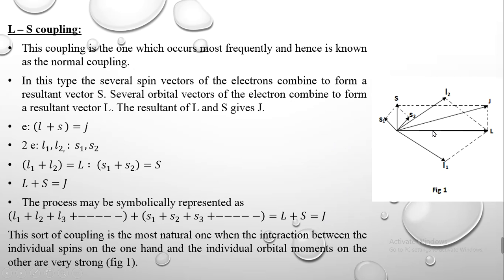Diagrammatically, it is represented in this figure. The resultant of S1 and S2 gives S, and the resultant of L1 and L2 gives resultant L. The vector sum of L and S gives rise to J. This is all about LS coupling.